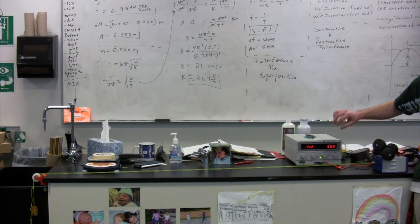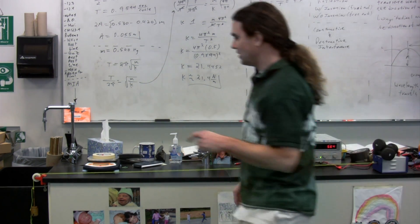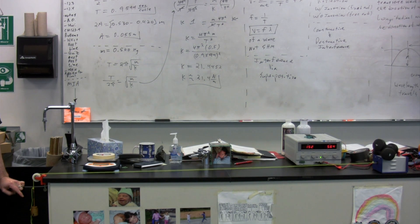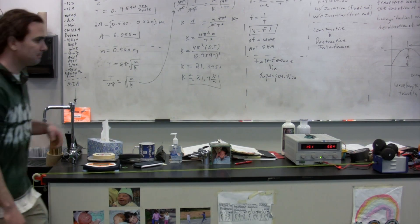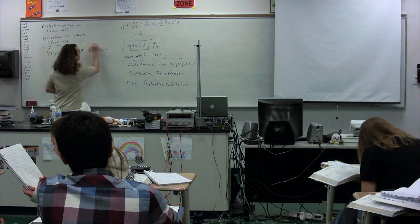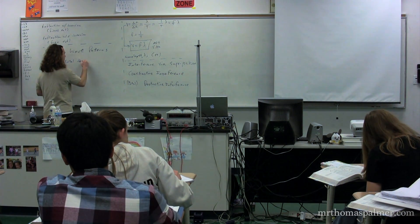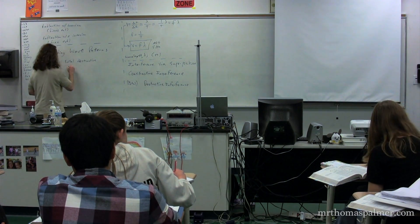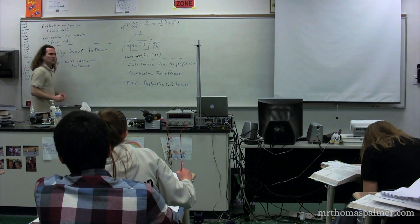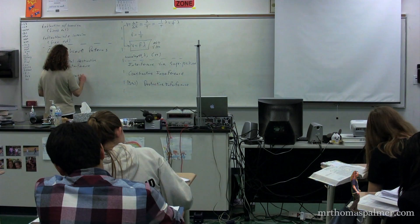One of the things that happens as we get faster and faster is we get to the point where, on the left-hand side, this is supposed to be keeping an even tension, and it will only work if the tension is constant. But we get to the point where this starts to move up and down, which means our tension is no longer constant, and I can't really set up a standing wave anymore. A node is a location of total destructive interference. An antinode is a location where you have constructive interference.